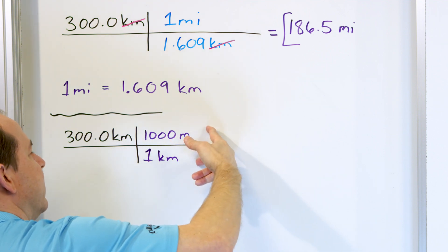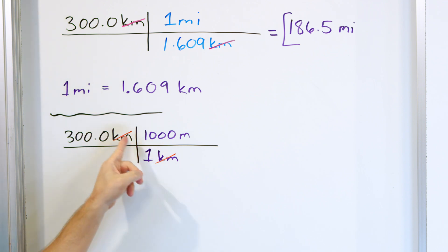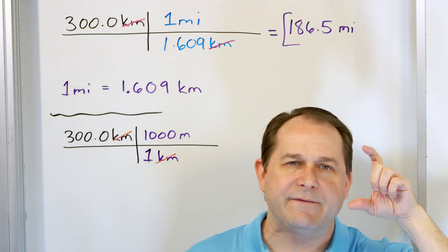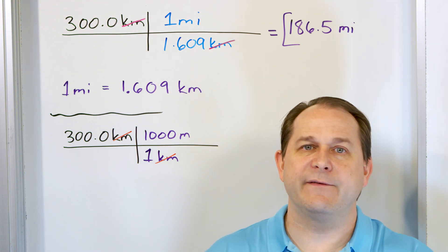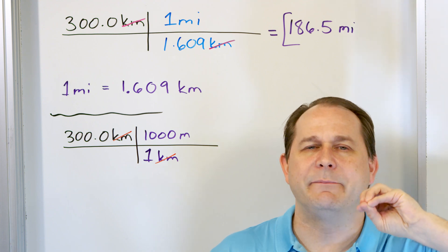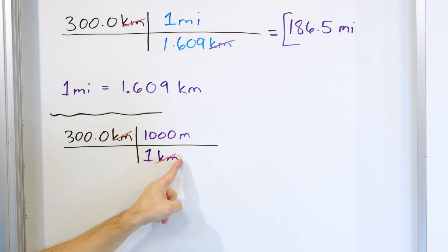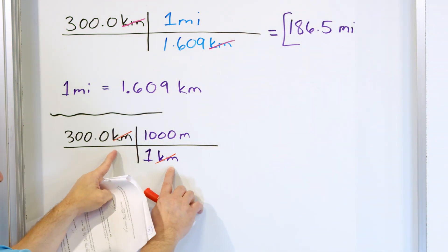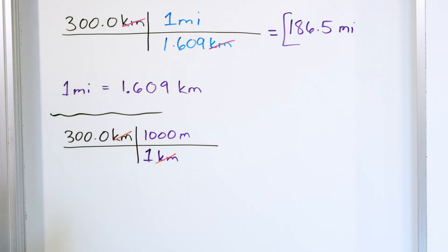Why did I write it this way — with 1,000 meters on the bottom and kilometers on top? Because this is the only way kilometers cancel, since it has to be on the top and bottom. Why do units cancel on top and bottom? Because you're multiplying on top and dividing. When you have the same thing on top and bottom, it cancels. For instance, 2 over 2 is 1. Six over 6 is 1. One thousand over 1,000 is 1. When you have something on the top divided by something on the bottom, it's 1 — they divide away and reveal 1. That's why they cancel. If we stop here, we'd have meters left, but we don't want meters — we want millimeters.